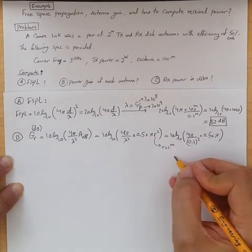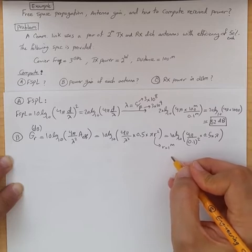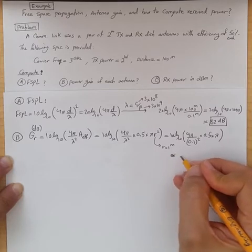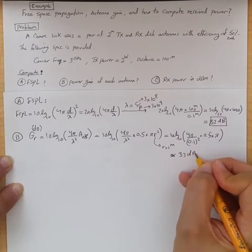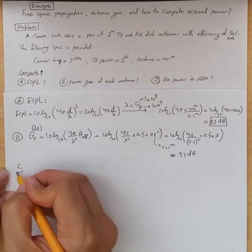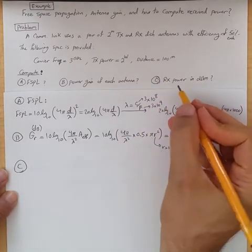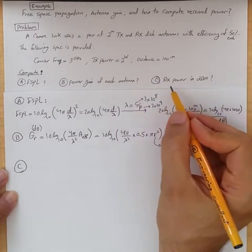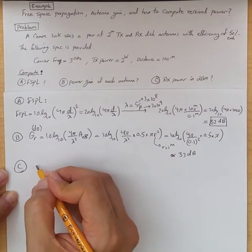you get roughly 33 dB of received antenna and transmit antenna gain. And part C is asking for Rx power or received power in dBm. Well,